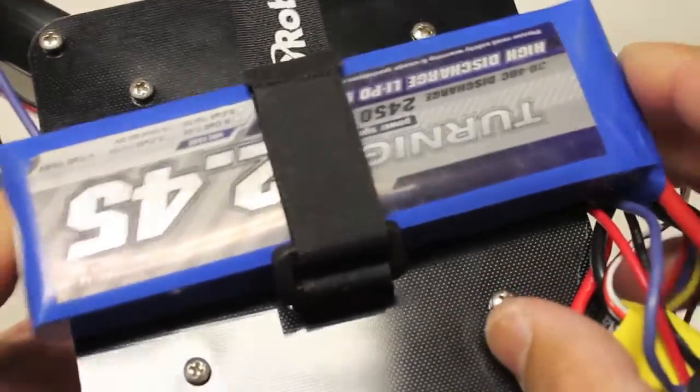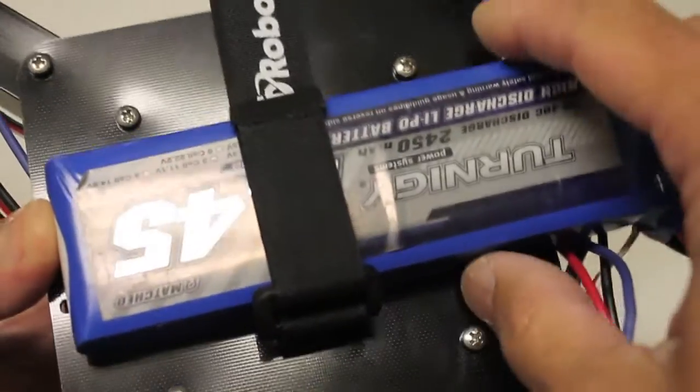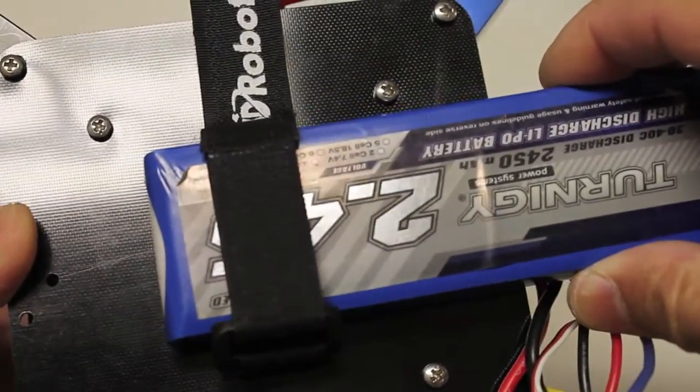And so as you can tell, this strap isn't as tight as you'd like it to be, and so about 30 feet in the air, the battery came loose, and I just saw it fall to the ground, and then shortly thereafter, the quad came down.